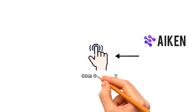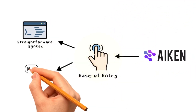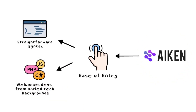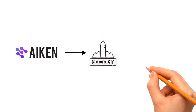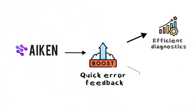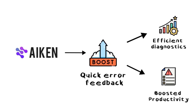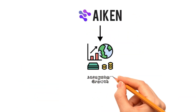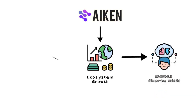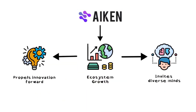Ease of entry: Aiken's straightforward syntax cuts through the complexity, welcoming developers from varied tech backgrounds. Boosted productivity: with quick error feedback and efficient diagnostics, developers spend less time fixing and more time creating. Ecosystem growth: Aiken invites a rich mix of minds to build diverse, powerful apps on Cardano, propelling the platform's innovation forward.